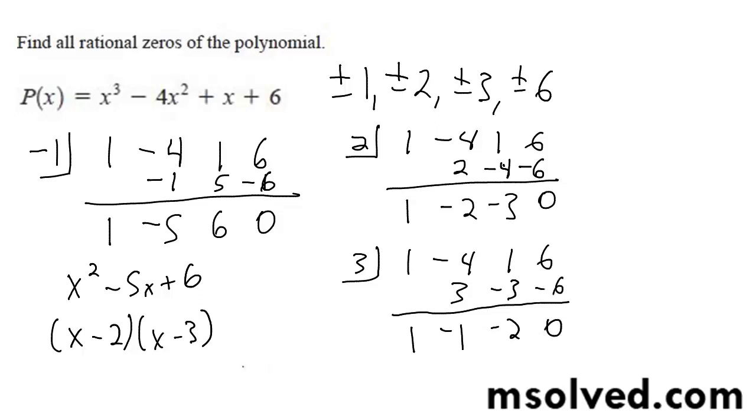And there you go. So our solutions are negative 1, 2, and 3. That's it. That's the most you can have because it's a cubic.